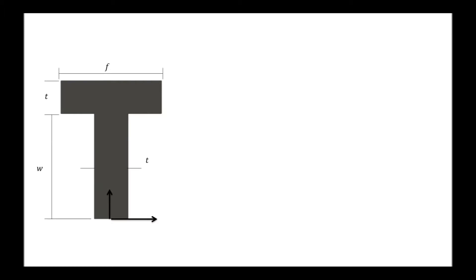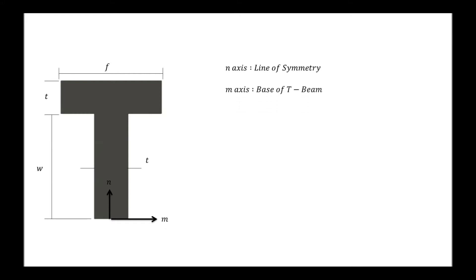Here's our cross-section for the T-beam. It has a width F, a thickness T for the web and flange, and a height of the web being W, with axes at the bottom of the cross-section. The vertical axis will be the N-axis, or line of symmetry, and the M-axis will be the base of the T-beam.